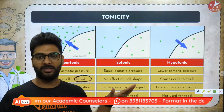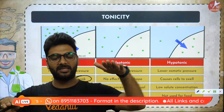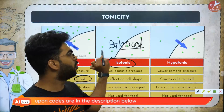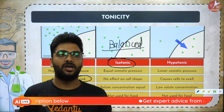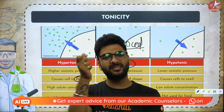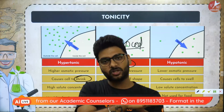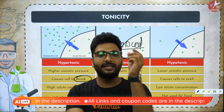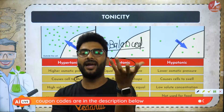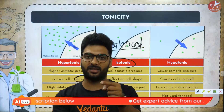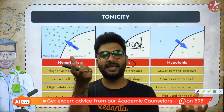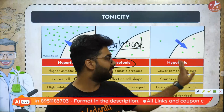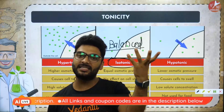In an isotonic solution, nothing happens — it is balanced, neither swelling nor shrinking. In a hypotonic solution, the cell swells. For example, if you put raisins (kishmish) in water overnight, the water — being less concentrated — moves inside the raisin, which swells. Water moves from lower concentration outside to higher concentration inside the raisin.